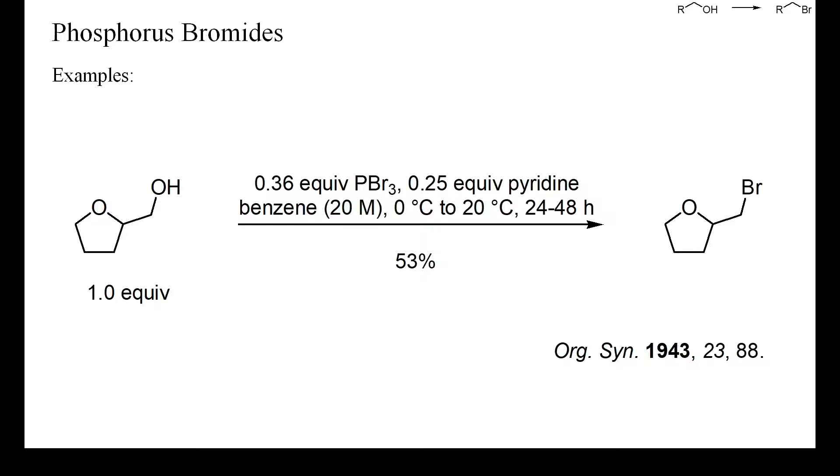In this example, the deoxybromination was performed in the presence of a small amount of benzene as solvent and of pyridine as base. Although the starting alcohol was not very reactive and despite the mild reaction conditions, an acceptable yield was achieved. Such conditions are particularly useful for acid-sensitive alcohols, prone to rearrangements.